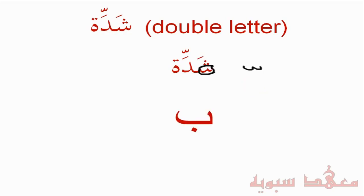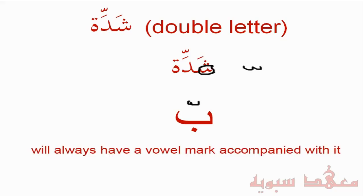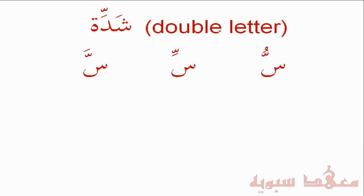If we double a letter, we add the Shaddah sign on top of it. A point to note is that the Shaddah will always have a vowel mark accompanied with it — either the Fathah, the Dhammah, or the Kasrah. For example, here we have three instances of the letter Seen with a Shaddah and the three different Harekat: the Shaddah with the Dhammah, the Shaddah with the Kasrah, and the Shaddah with the Fathah.